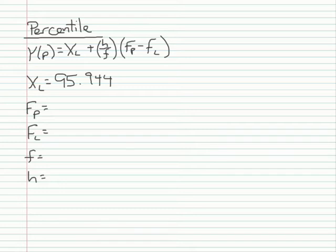Next, I need to find f sub p, which is the frequency of scores below the percentile point. You can compute this as simply the sample size n times p divided by 100. That's going to be 30 times p, which is 50, because I'm interested in the 50th percentile, divided by 100, which equals 15.